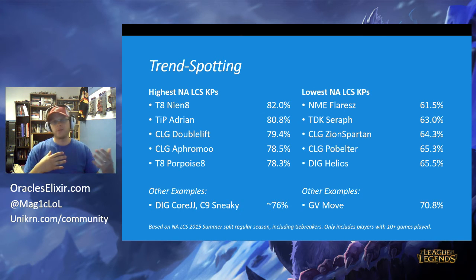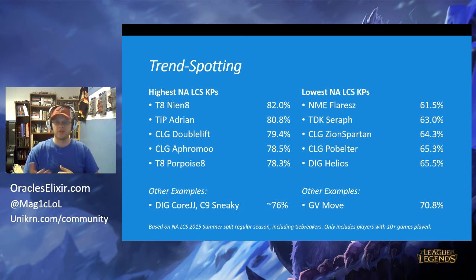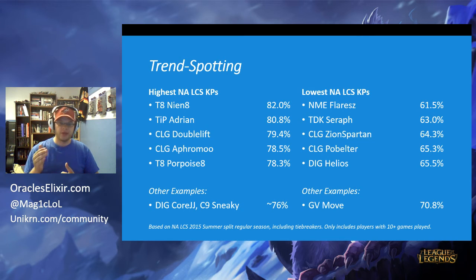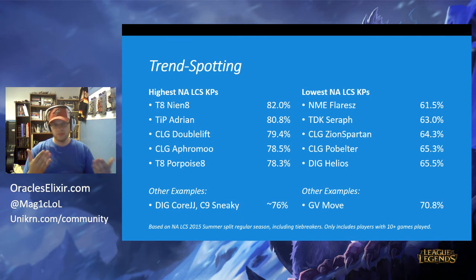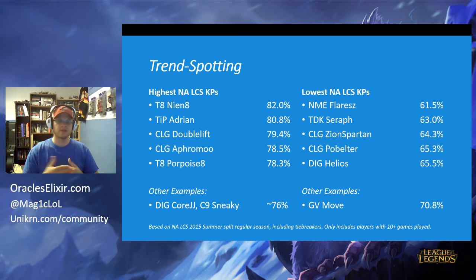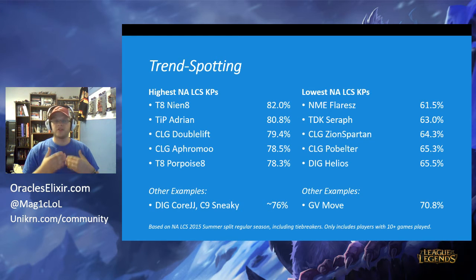These high and low numbers can come from very different reasons. Move from Gravity, for example, was considered by many to be the best or one of the best junglers in the region during the regular season, yet he had a pretty mediocre kill participation of only 71%. So we need to understand why some players get high kill participations and why others get low ones, and how that helps us judge their performances.